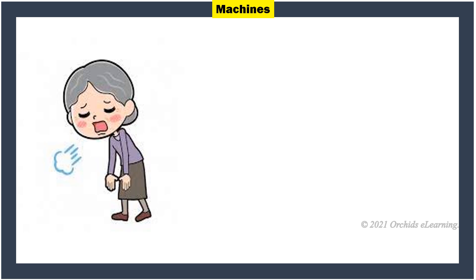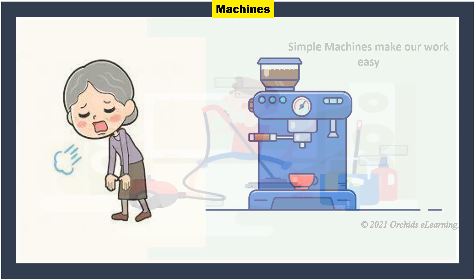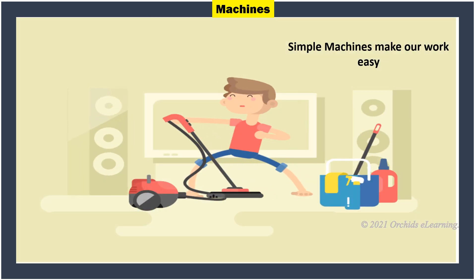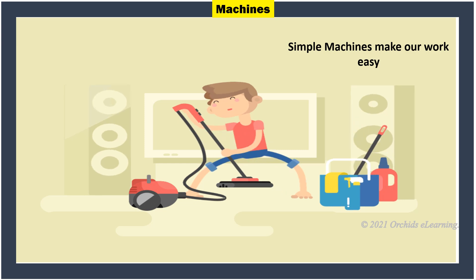Machines: When a task is difficult to do with our hands, we use tools called machines. A simple machine is a tool that makes our task easier and faster with the use of less force.